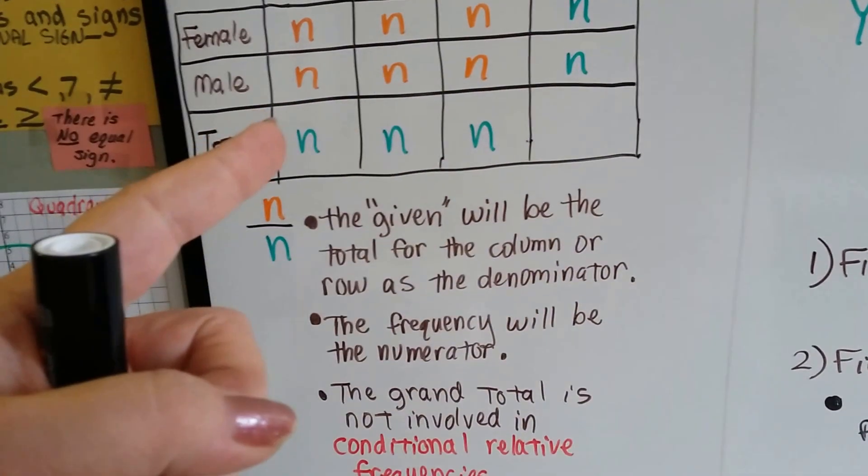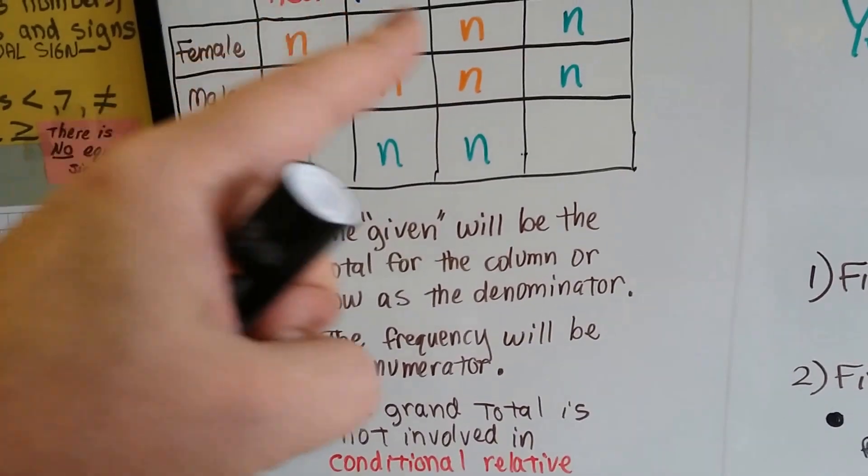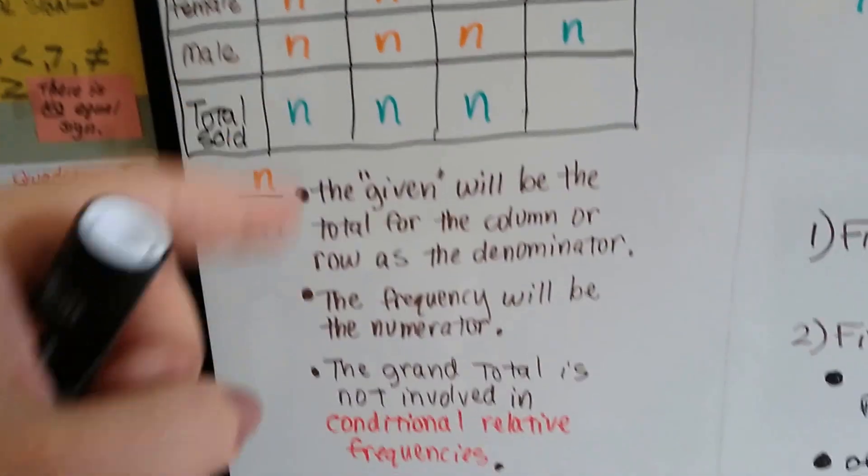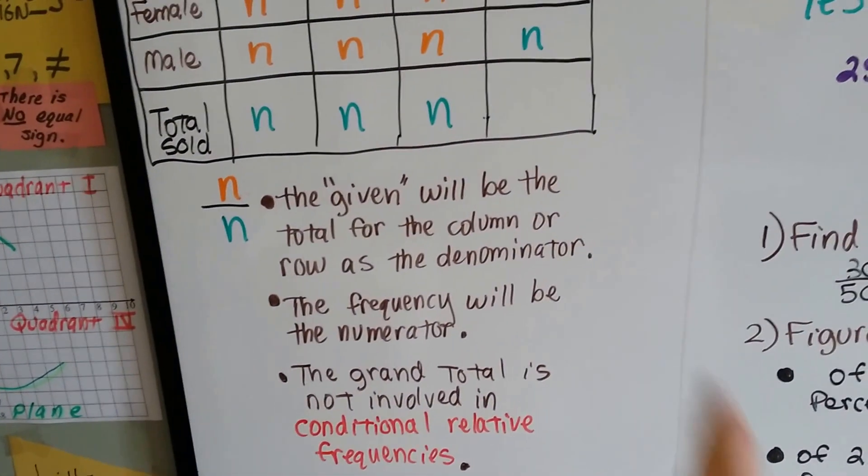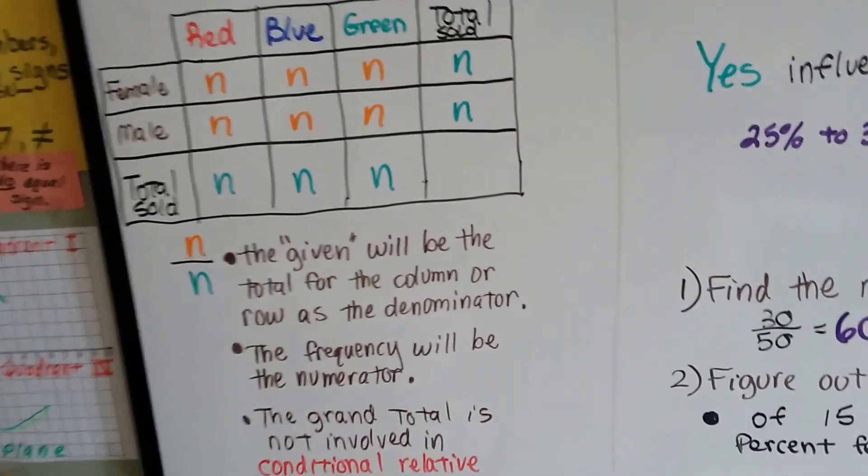The given will be the total for the column or row as the denominator. And the frequency up here will be the numerator. And the grand total is not involved in the conditional relative frequencies at all. It doesn't have anything to do with the grand total.